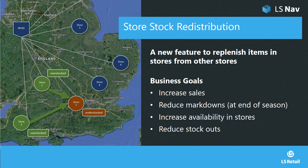The aim of this functionality is to achieve the following business goals. First, to increase sales in your stores. Second, to reduce markdowns at the end of the season or the end of the life cycle of the product. And then to increase availability in the stores and of course to reduce stock outs.